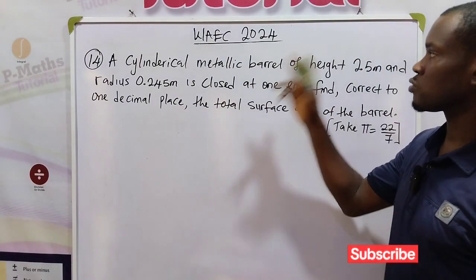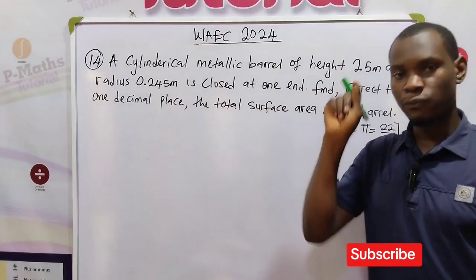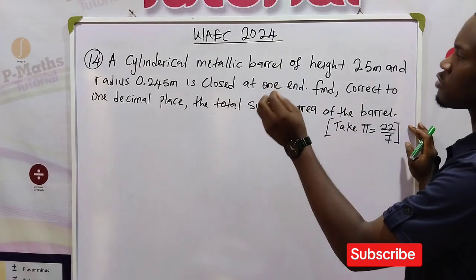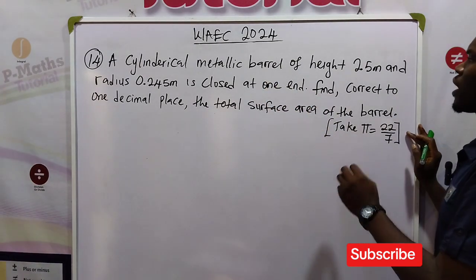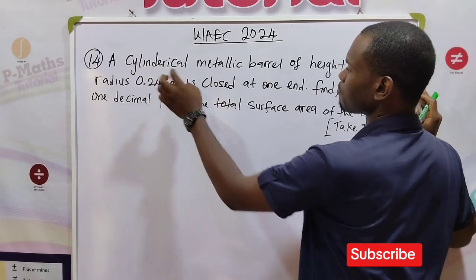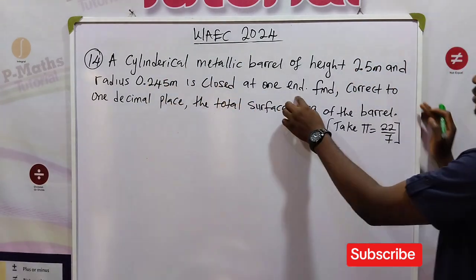Here we have question number 14 of 2024 mathematics WAEC past equation. Let's solve this question. A cylindrical metallic barrel of height 2.5 meters and radius 0.245 meters is closed at one end.